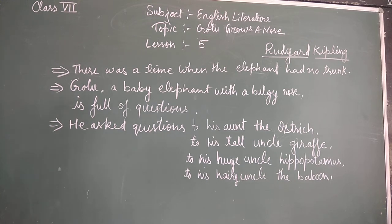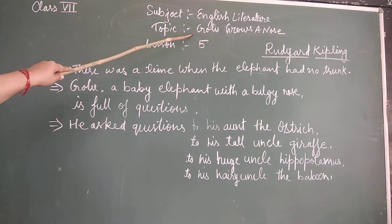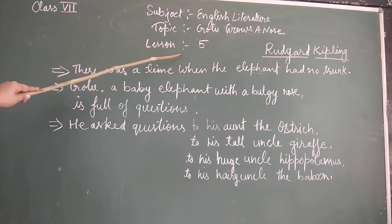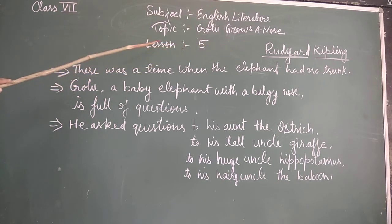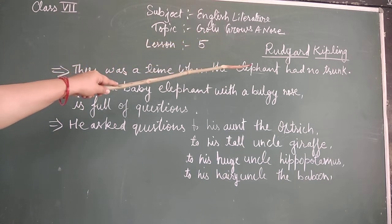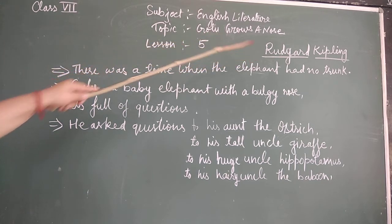Good morning students. Today we will start our new chapter: Guru grows a nose from an alien hand. This is your fifth chapter. It is written by Rudyard Kipling.